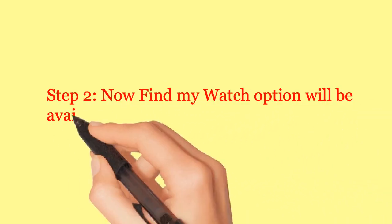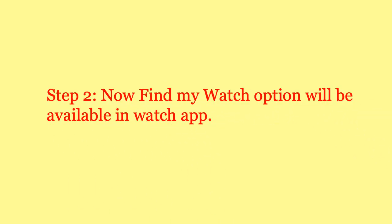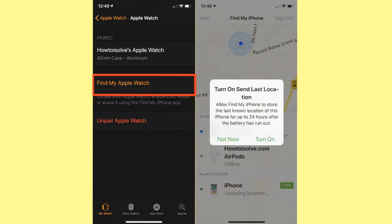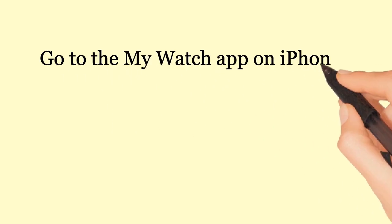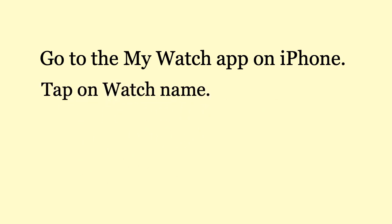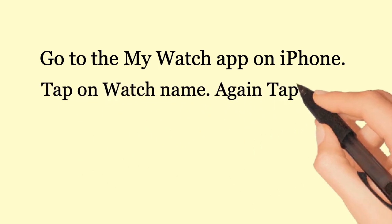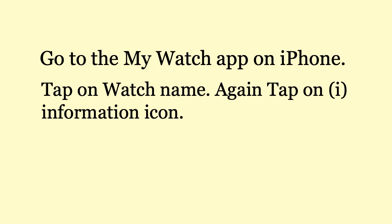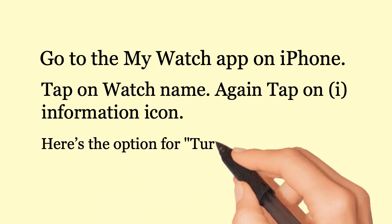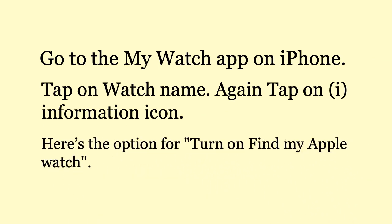Step 2: Now the Find My Watch option will be available in the Watch app. Go to the My Watch app on iPhone, tap on Watch Name, then tap on the i-Information icon. Here's the option to turn on Find My Apple Watch.